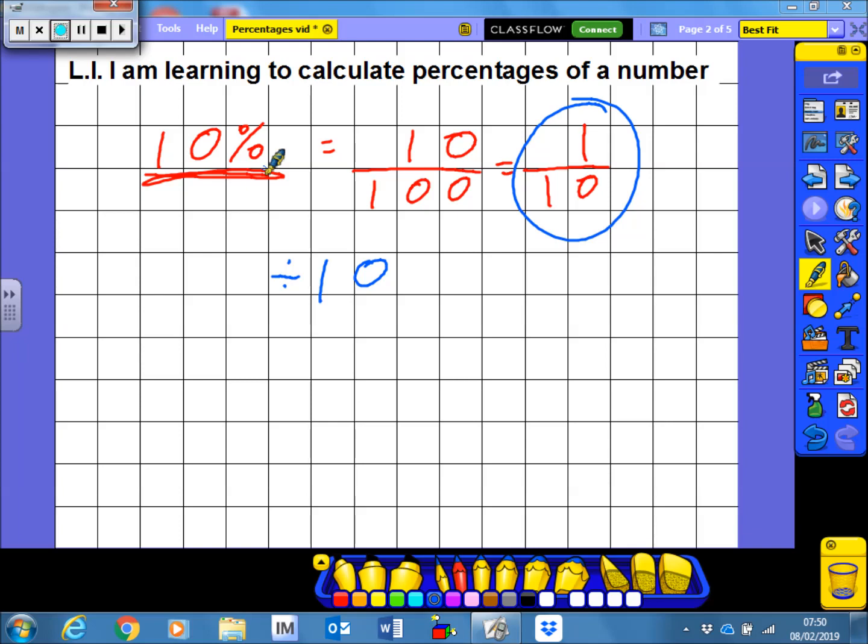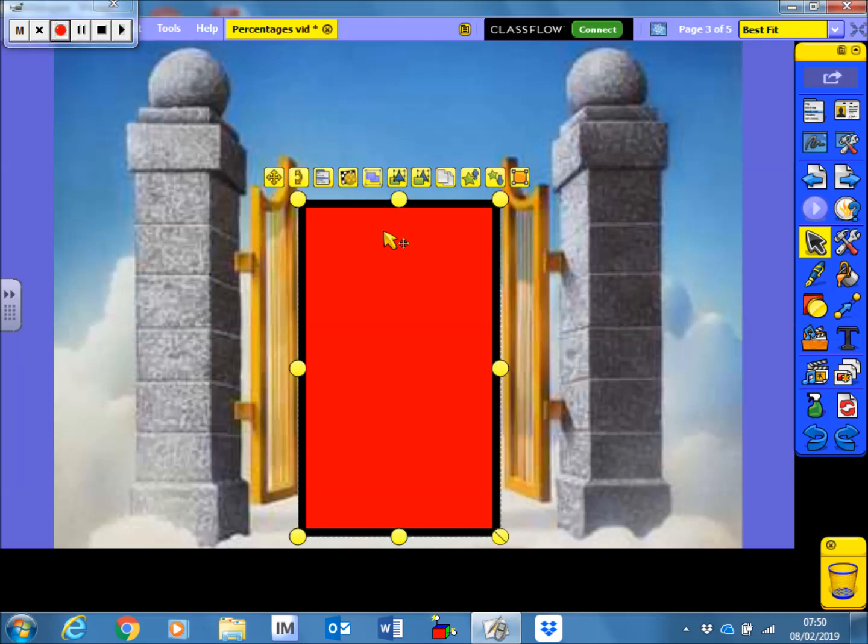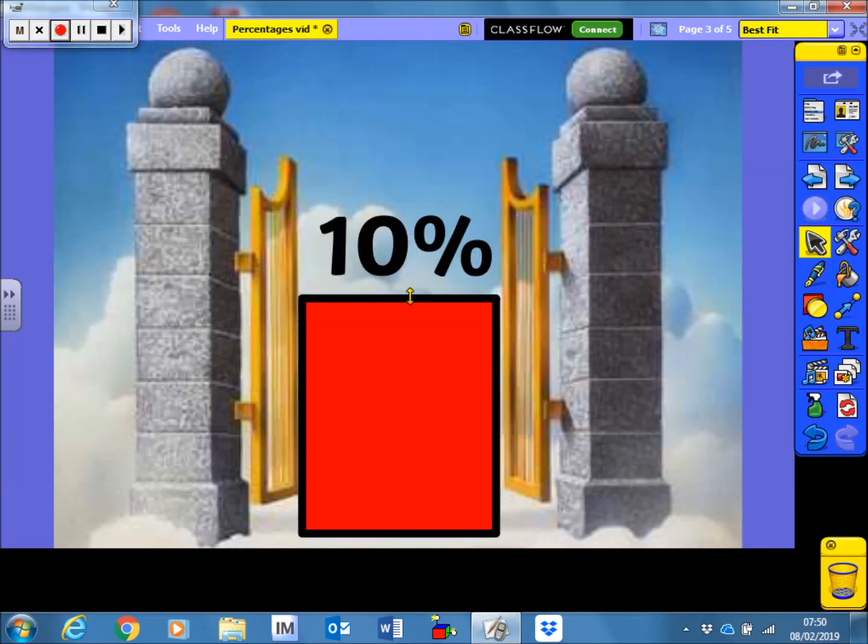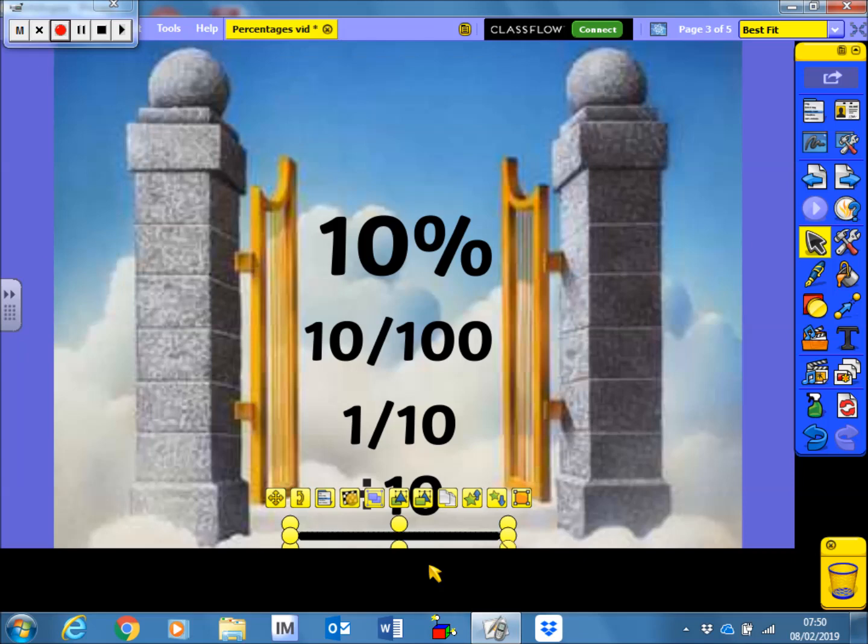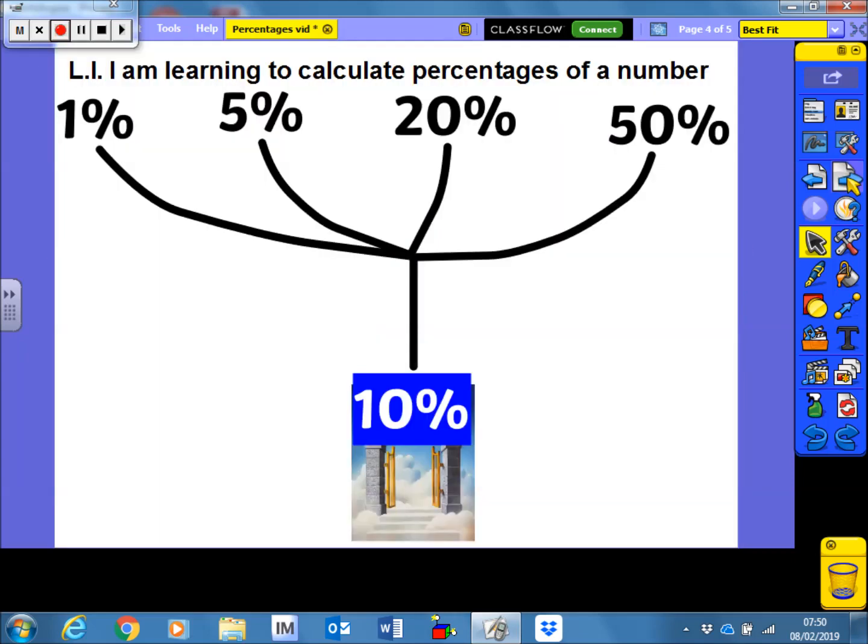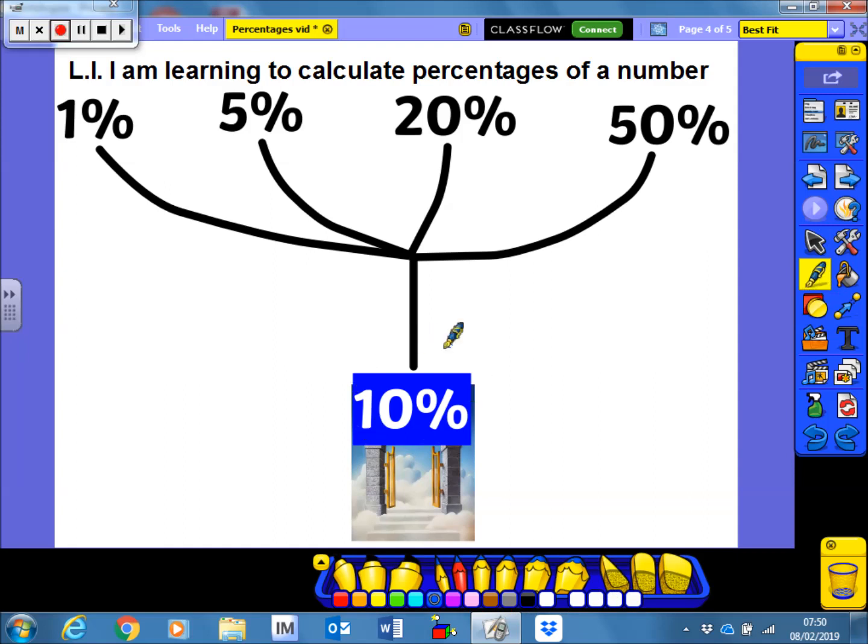And that then allows us to work out loads of other percentages. So I often describe 10% as being our gateway percentage. So I've already discussed that it's just 10 hundredths, which can then be simplified to a tenth, which is effectively just dividing by 10. But the reason it's our gateway percentage is it lets us work out loads of other percentages.